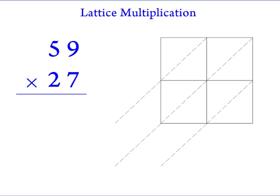First, we will write one factor along the top of the lattice and the other along the right, one digit for each row or column. So we will put the 59 along the top and the 27 along the right.